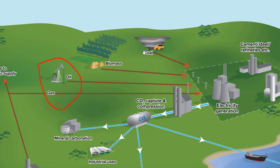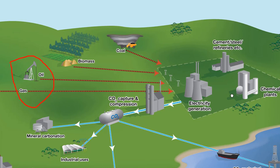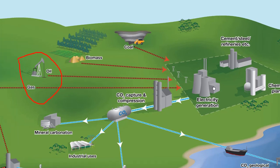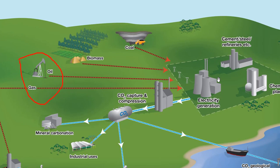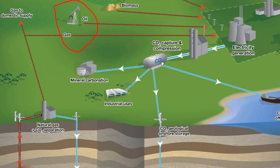Oil, gas, biomass, coal will be consumed by electricity generation — pembangkit listrik. CO2 will be produced by this electricity generation, and then the CO2 will be delivered via pipeline and stored in the CO2 capture and compression facility. This will be the hub — tempat berkumpul semua pipa-pipa CO2.